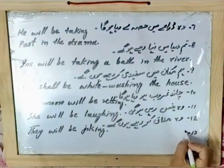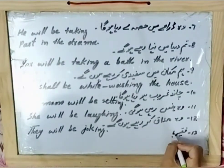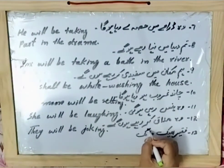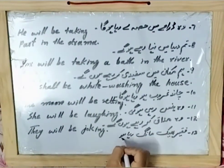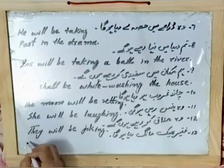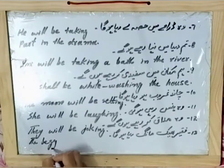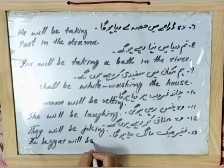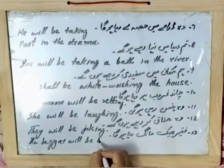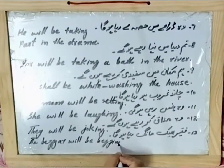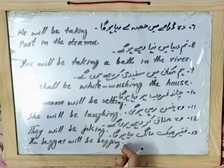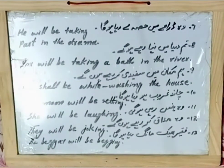Next example: 'Faqeer' — the beggar. Subject: 'the beggar.' Helping verb: 'will be.' The English for begging is 'bagging' — wait, it is 'begging.' 'Bag' plus '-ing' — when there is stress in the middle, we double the consonant. So: the beggar will be begging.